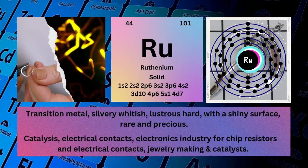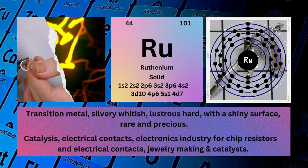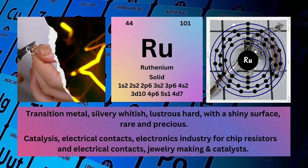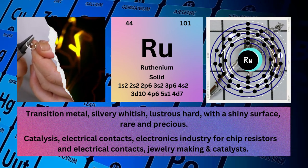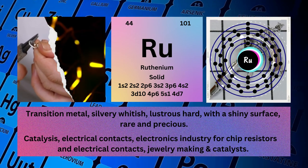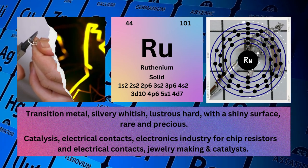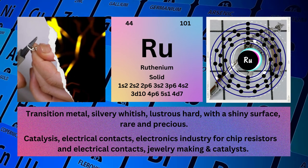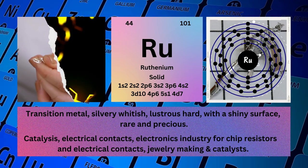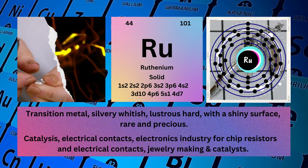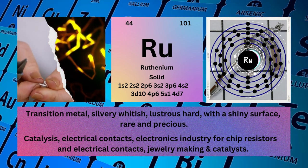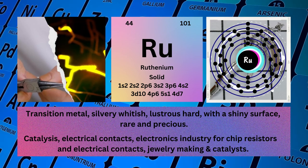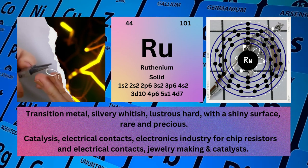Ruthenium. Atomic number 44. Mass number 101. Symbol: Ru. State: solid. Electronic configuration: 1s² 2s² 2p⁶ 3s² 3p⁶ 4s² 3d¹⁰ 4p⁶ 5s¹ 4d⁷.